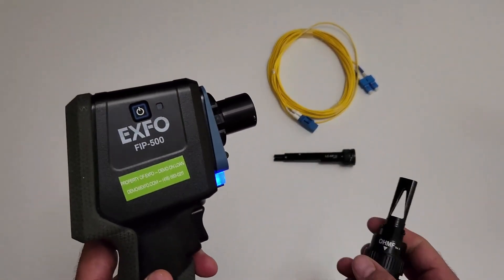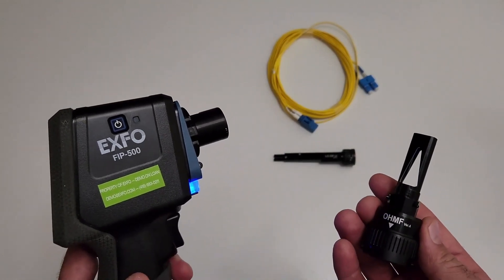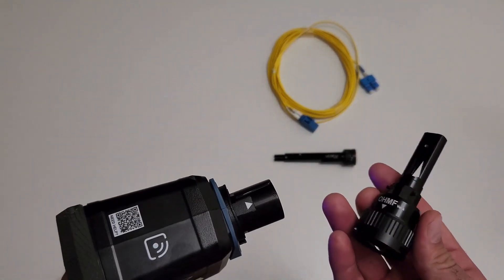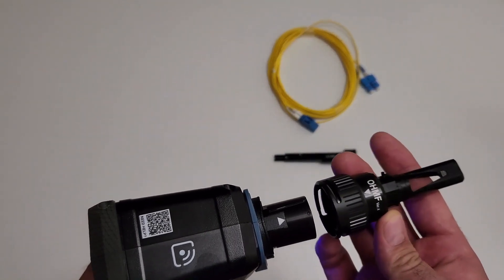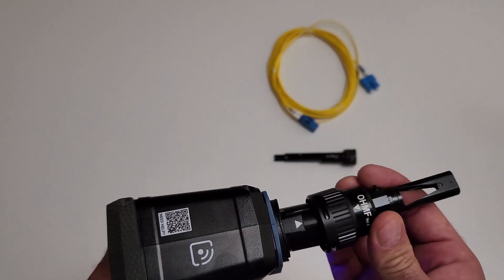The FIP-500 supports single-fiber, duplex-fiber, and multi-fiber inspection. You can change the optical head when you need to switch from one type of inspection to the other.